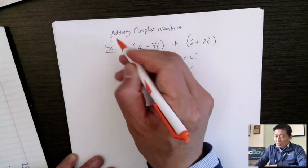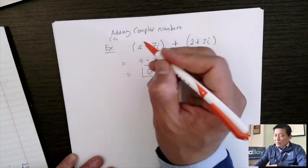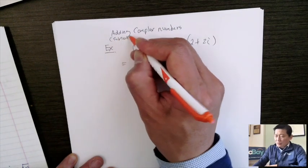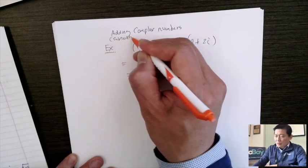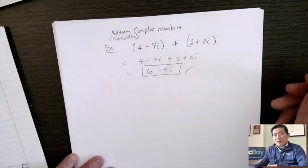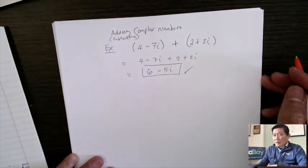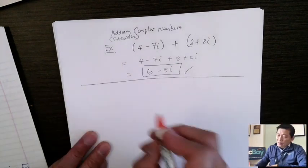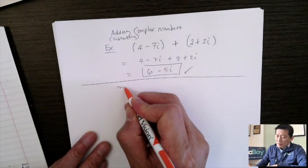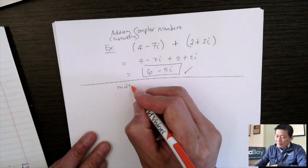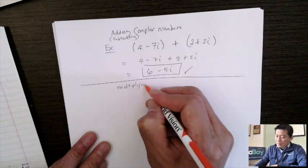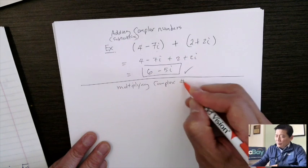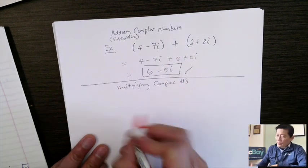Adding and subtracting follow the same rule and process — straightforward enough. Now let's talk about multiplying complex numbers.